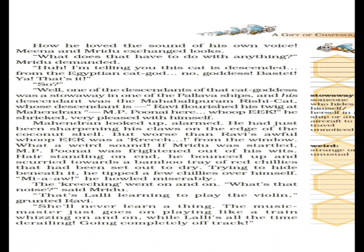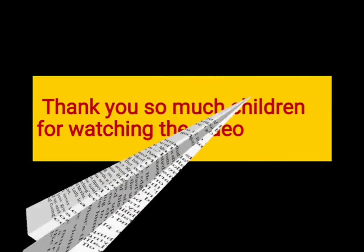The screeching went on and on. 'What's that noise?' said Mridu. 'That's Lali learning to play the violin,' grunted Ravi. 'She will never learn a thing. The music master just goes on playing like a train whizzing on and on, while Lali is all the time going completely off track.' Ravi explained: Masterji plays the violin beautifully, like a train on the correct track, but when Lali plays, the sound goes completely off track. That is the complete explanation of the first part of the lesson.